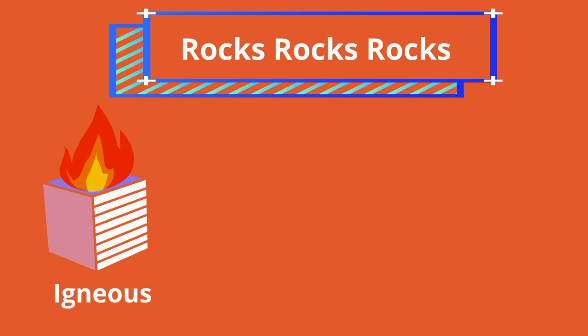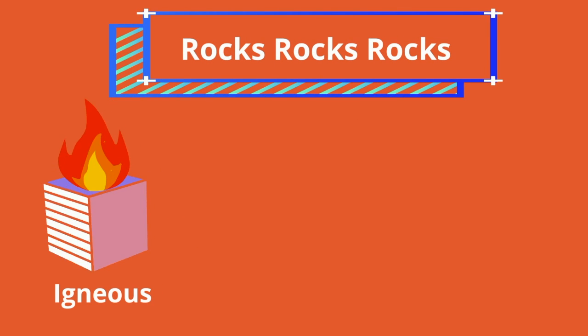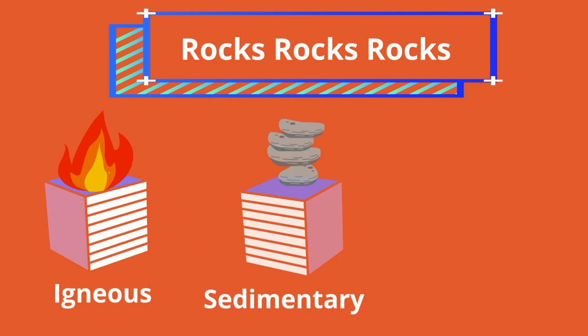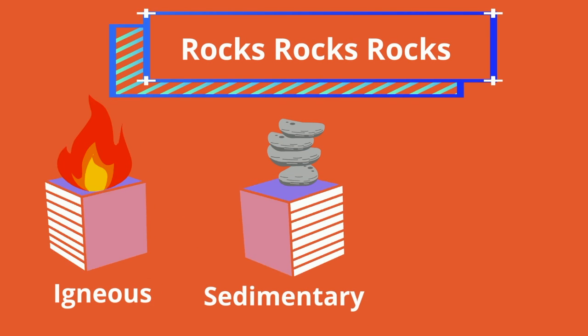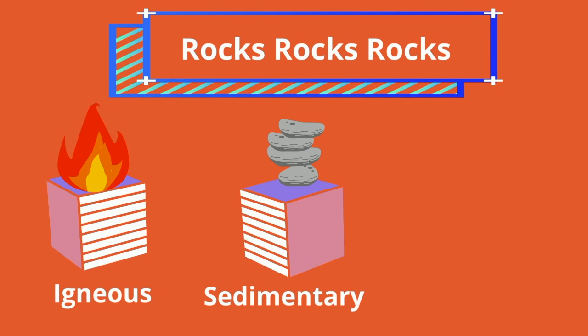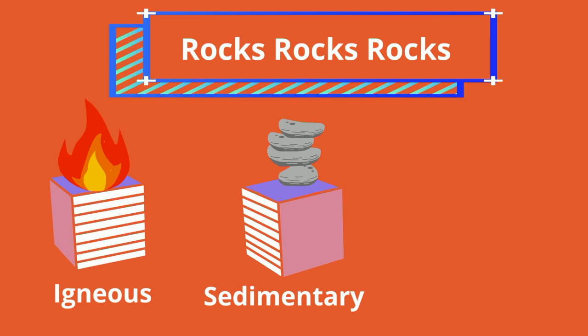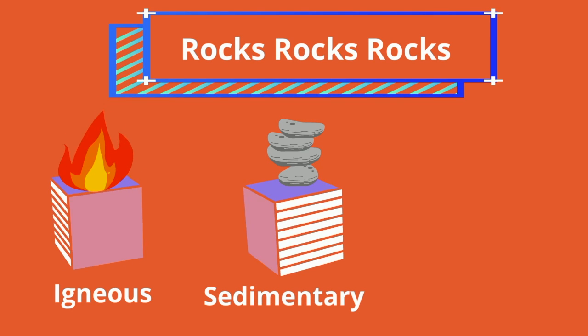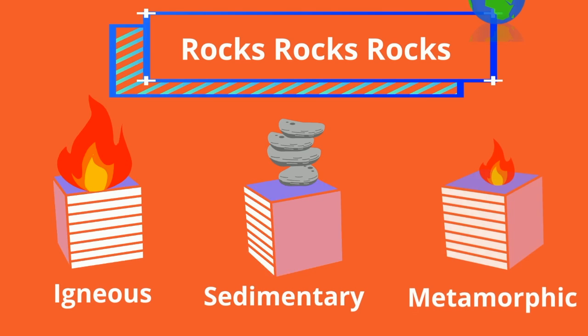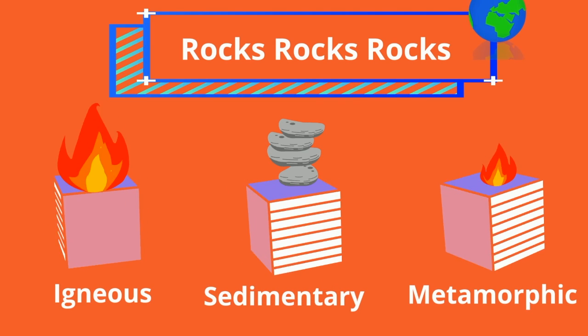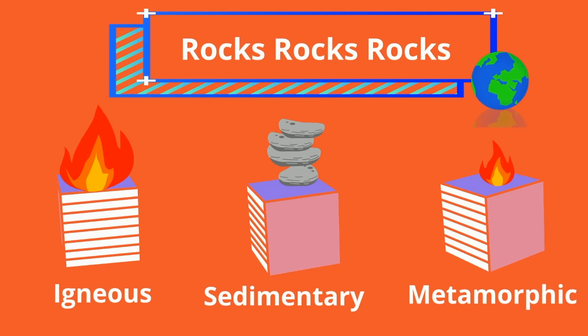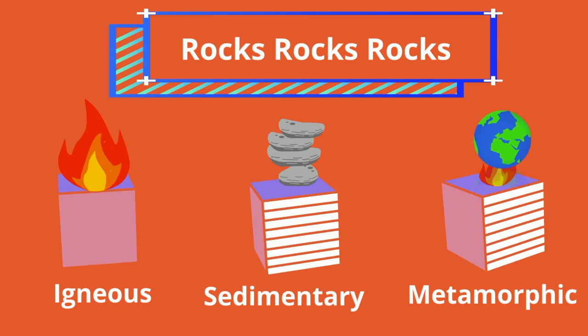Igneous rocks, which are born of fire. Sedimentary rocks, which many come from sediments called clasts. And metamorphic rocks, which come from heat and pressure.